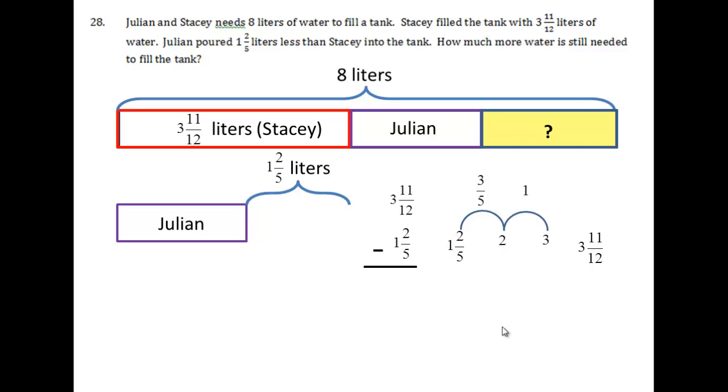I make a big jump to 3. That's worth 1. And then I make 1 baby jump to 3 and 11 twelfths. Now how do I get from 3 to 3 and 11 twelfths? Simple. You add 11 twelfths. So to find out how much Julian put in, we need to add these up.